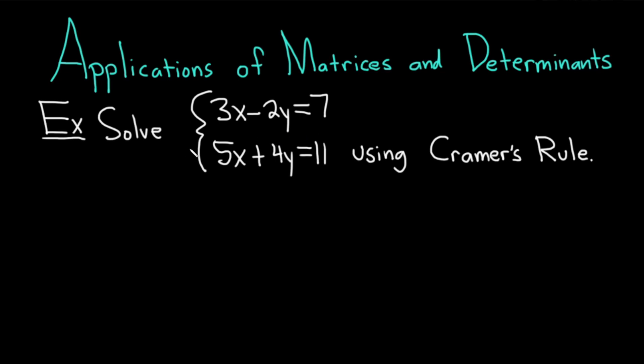I'm going to do an example of solving a system of equations using Cramer's rule. The question is to solve the system with equations 3x minus 2y equals 7 and 5x plus 4y equals 11 using Cramer's rule. Let's carefully work through the solution.